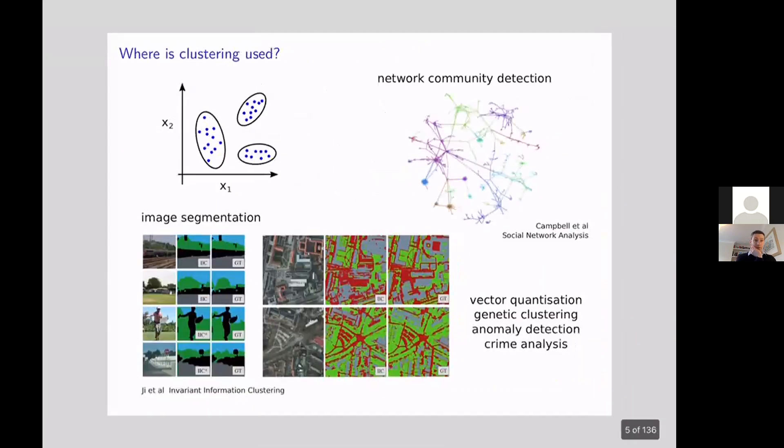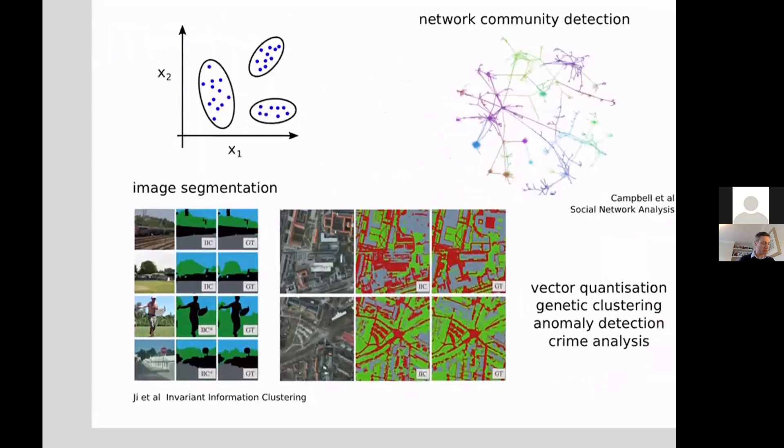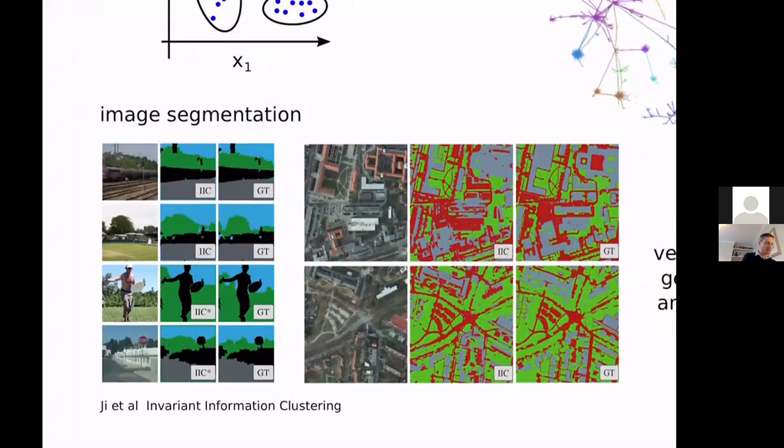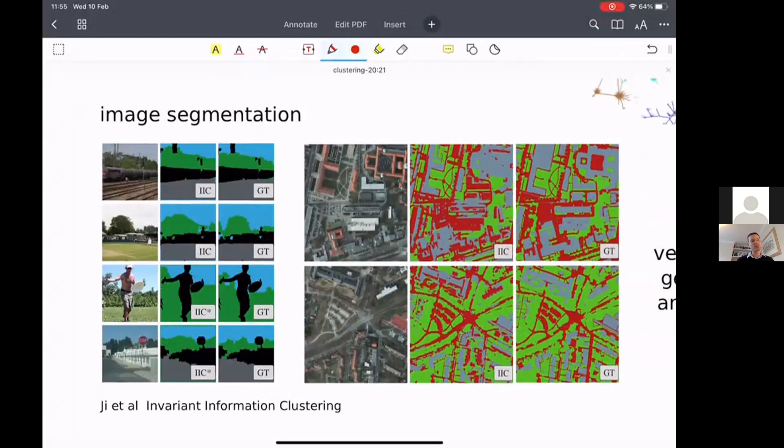Where is clustering useful? So we're going to talk about some applications now. And one really interesting application is image segmentation shown at the bottom here. So for each pixel, we assign it to one of K different categories, K different clusters. And the idea is